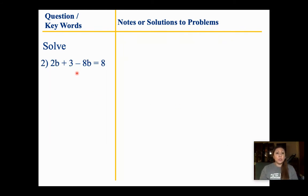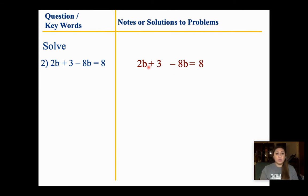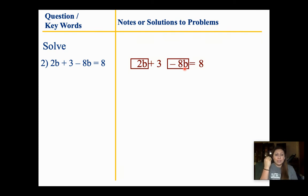For question 2, it's very similar to question 1. Again, we're looking to see if we have any parentheses — we don't. But we do have like terms. I'm going to look and see what my like terms are. In this case, I have a 2b and a negative 8b. I would suggest you highlight, underline, or box them like I did so you can directly see these two pieces are my like terms.